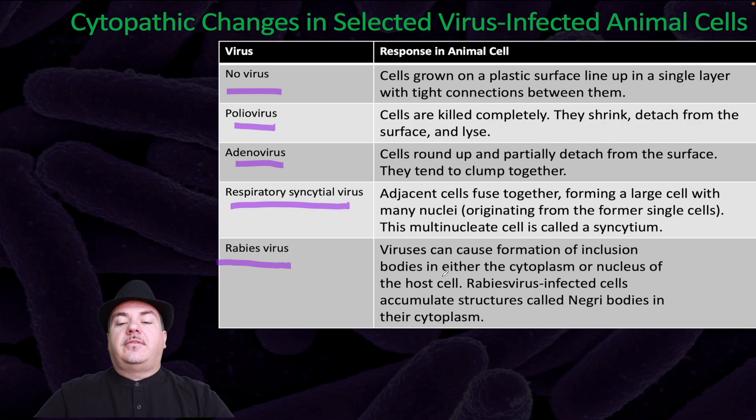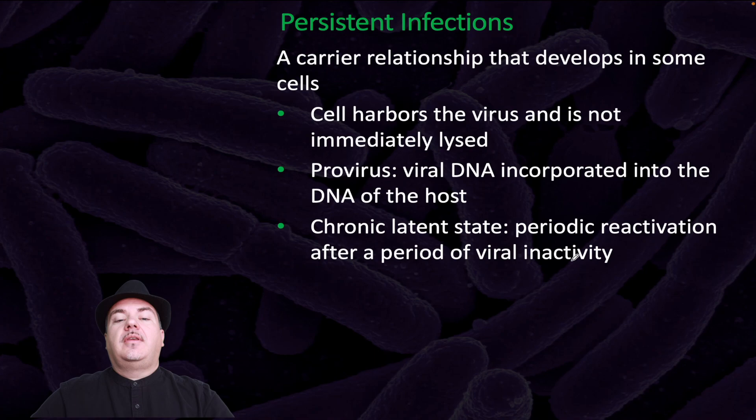Persistent infections are a carrier relationship that develops in some cells. The cell harbors a virus and is not immediately lysed. A provirus is viral DNA incorporated into the DNA of the host. A chronic latent state involves periodic reactivation after a period of viral inactivity.